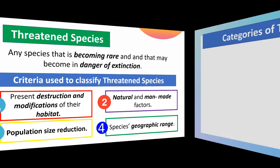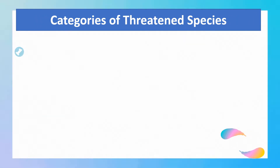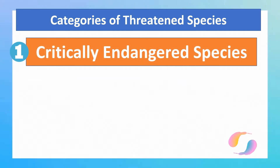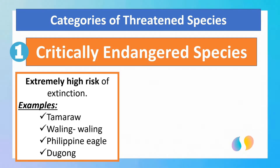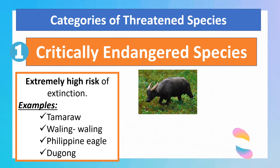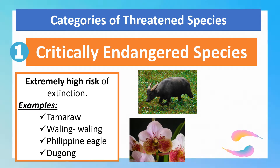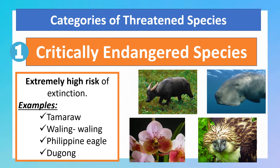Threatened species can be classified into three categories. The first are critically endangered species — plants and animals with an extremely high risk of becoming extinct. Some examples of critically endangered species in the Philippines are the tamaraw, the waling-waling, the Philippine eagle, and the dugong.